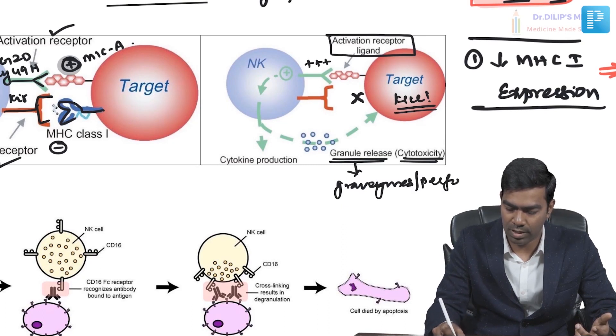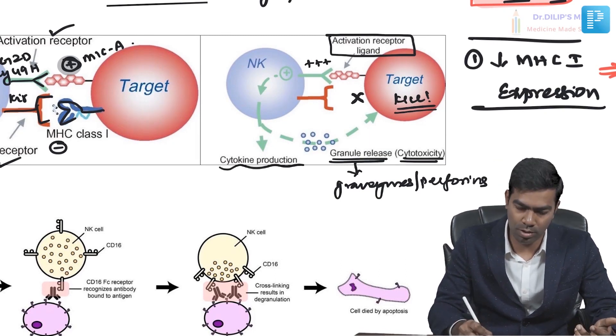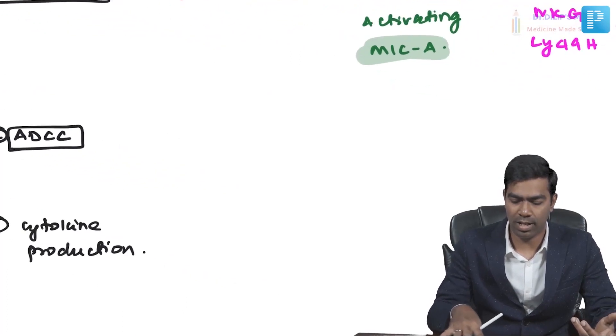Granule release produces granzymes and perforins. NK cells also produce cytokines — typically TNF-alpha and interferon gamma. Interferon gamma is a very important and powerful cytokine, and TNF-alpha recruits neutrophils and phagocytes to the site of inflammation to kill and phagocytose the target cell.